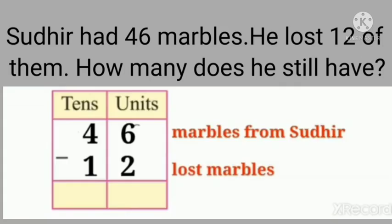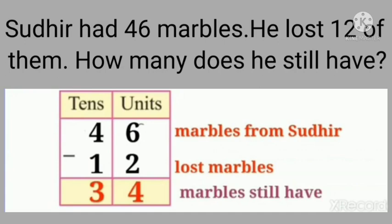Marbles Sudhir had: 46. Lost marbles: 12. We will subtract 12 from 46. First, in the unit column, 6 minus 2 is equal to how much? Yes, 6 minus 2 is equal to 4. Now in the tens column, 4 minus 1 is equal to how much? Yes, 4 minus 1 is equal to 3. So Sudhir still has 34 marbles.